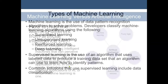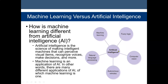For example, under artificial intelligence we have machine learning, fuzzy logic, computer vision, and autonomous vehicles. Autonomous vehicles use machine learning algorithms most of the time. Natural language processing also uses machine learning algorithms.